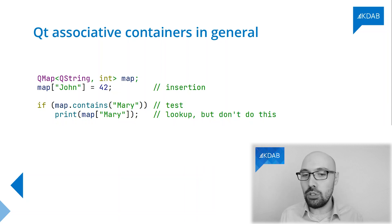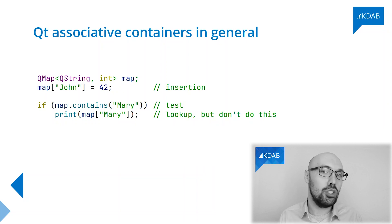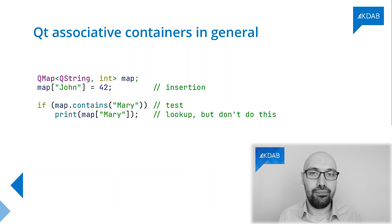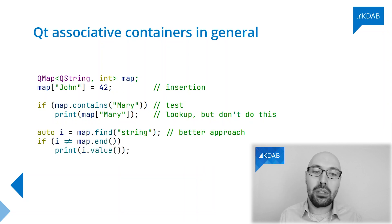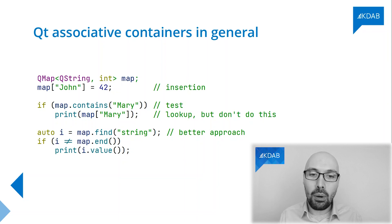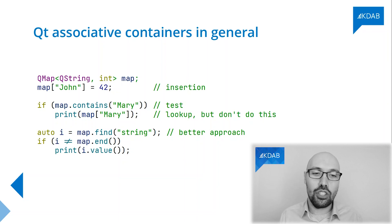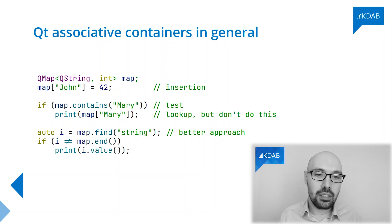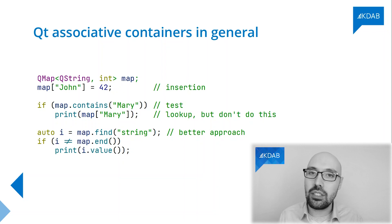There is a contains method that allows you to look up whether a given map contains a given key. And then you can use the subscript operator again for retrieving the data out of the map in order to print it. But don't do this — because you're accessing the map twice to retrieve the same key. That's not efficient, so a better approach would be to use find, which returns an iterator pointing to the given key. If that iterator is not pointing to the end of the map, you know you've found it, so you can print the value and the key corresponding to that iterator.